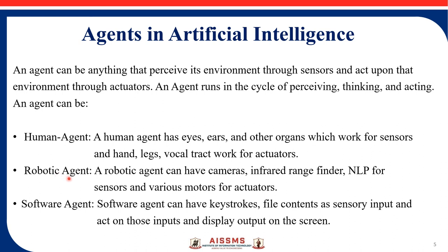For robotic agents, cameras, infrared range finders, and NLP serve as sensors, and various motors serve as actuators. A software agent can have keystrokes and file contents as sensory input, and act on those inputs to display output on the screen.